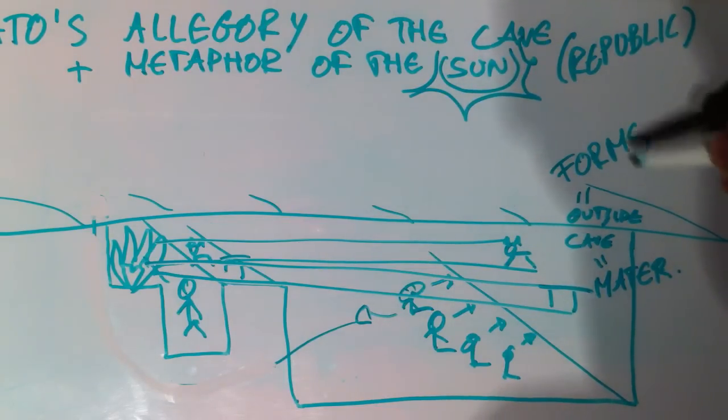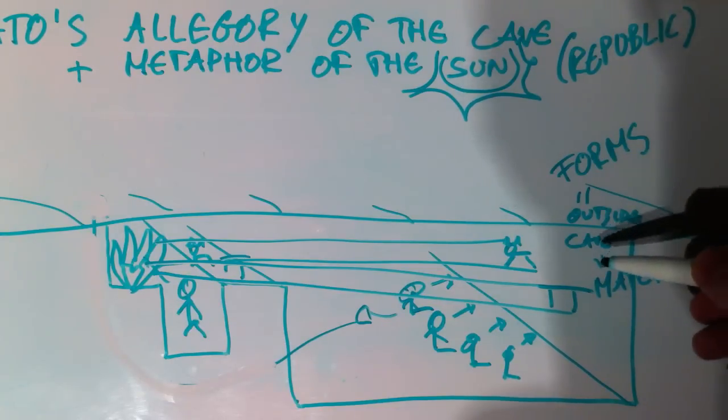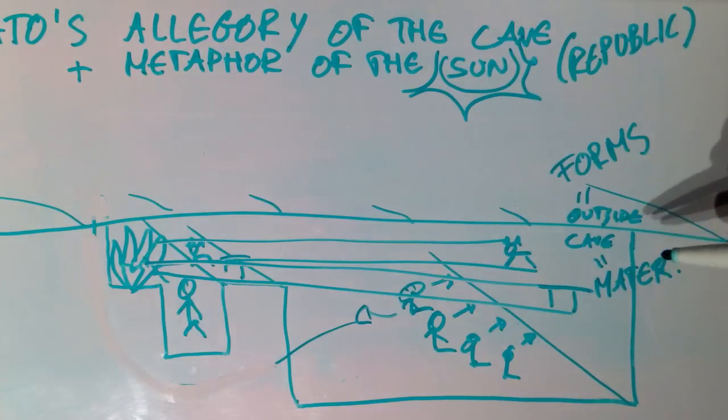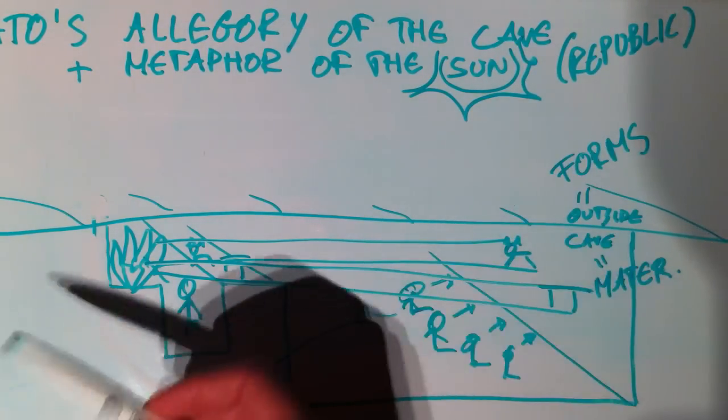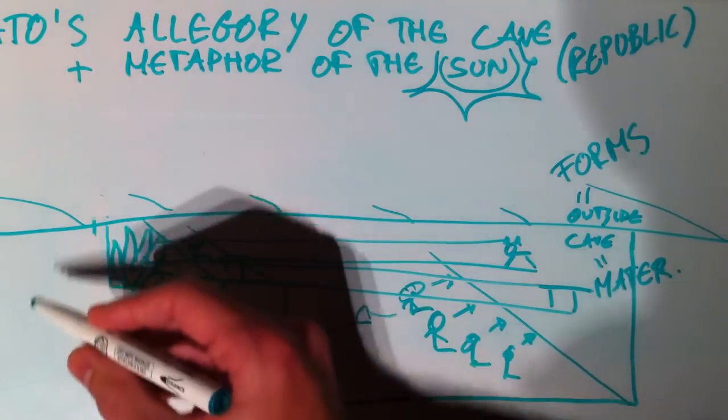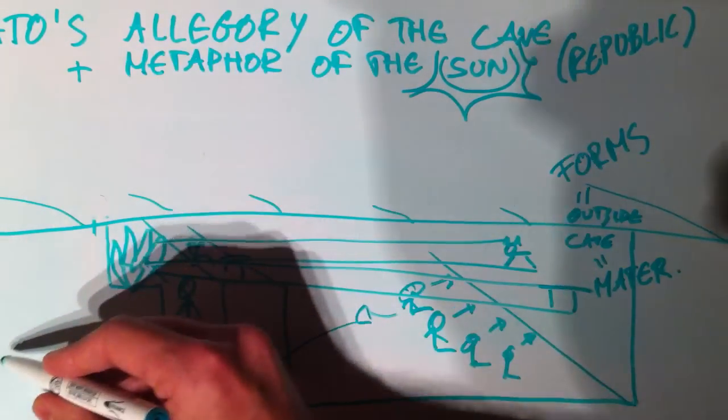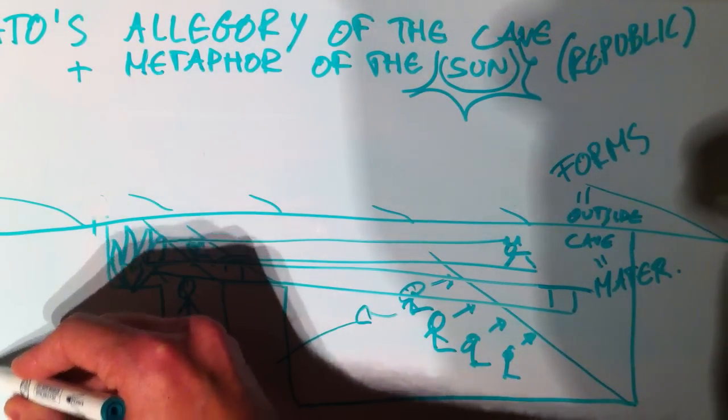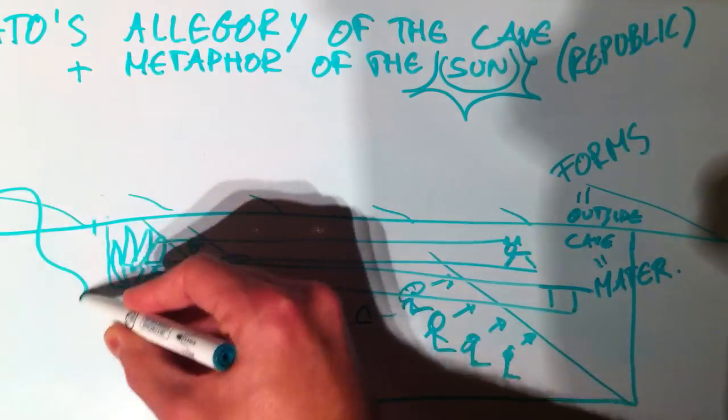Or put otherwise, this is the realm of the intelligible things, and this is the realm of the visible things. Okay, so I can actually draw this guy that I've been drawing during all the tutorials. So let me introduce him here. Here he is.